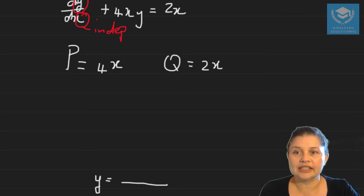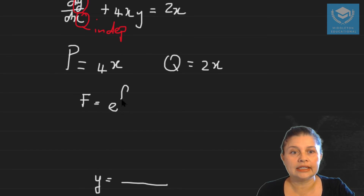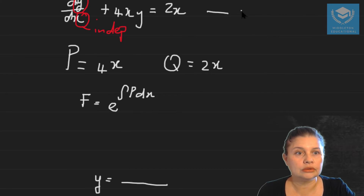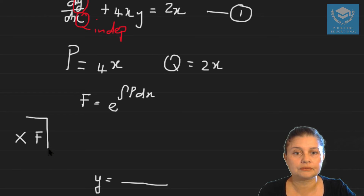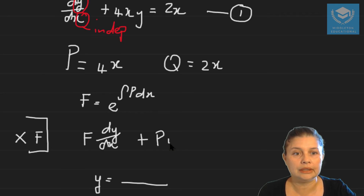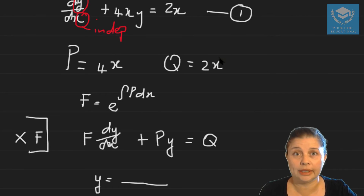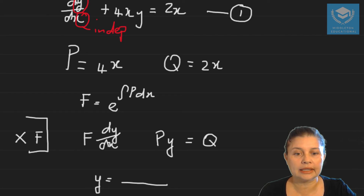You recall I spoke about the integrating factor, and we're going to be using it in order to solve. The integrating factor is defined as e to the power of the integral of p dx. I am going to use that equation and multiply through — multiply by f. So I'm going to write f times dy/dx plus f times p equals f times q, because we know that p is 4x and q is 2x.